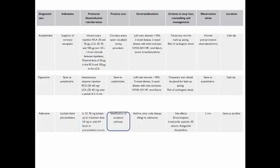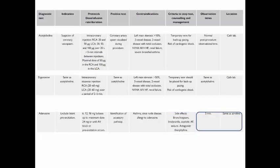The adenosine test is used to exclude latent pre-excitation, starting with bolus doses of 6, 12, 18 mg up to a maximum of 24 mg, or until AV block appears to reveal manifest pre-excitation. Contraindications include asthma, sinus node dysfunction, and allergy. Side effects include bronchospasm, bradycardia, asystole, atrial fibrillation, and seizures; the antagonist is aminophylline. Observation time is just 5 minutes in a location with resuscitation equipment.